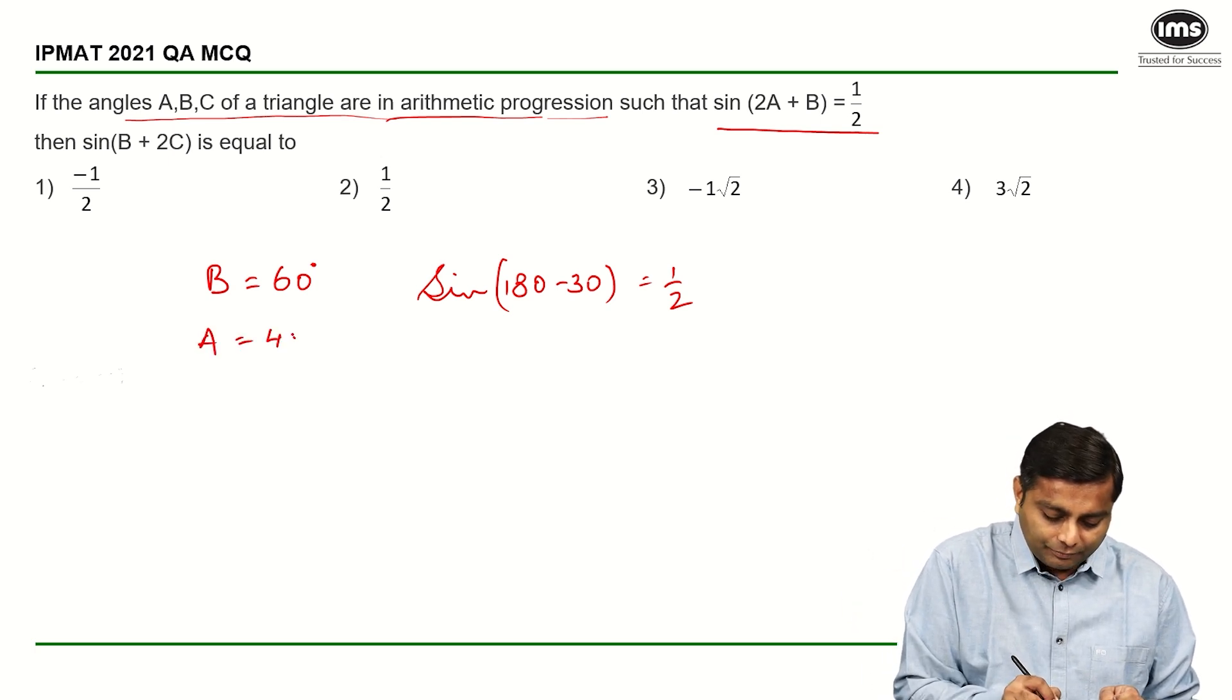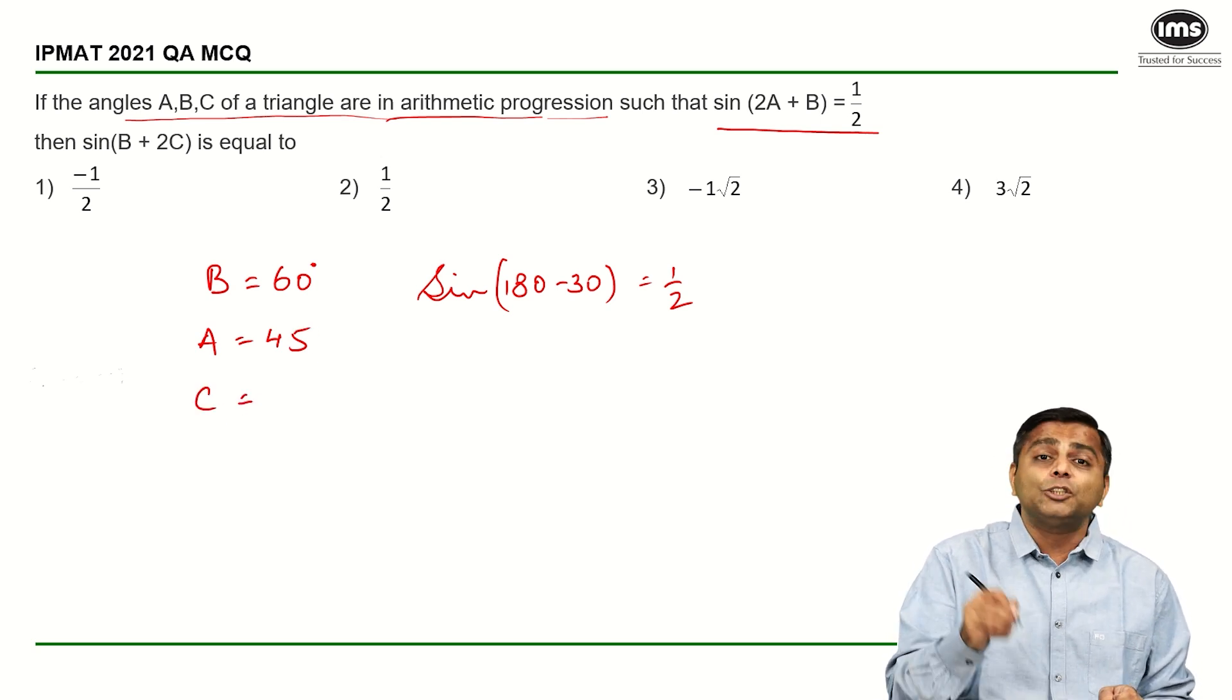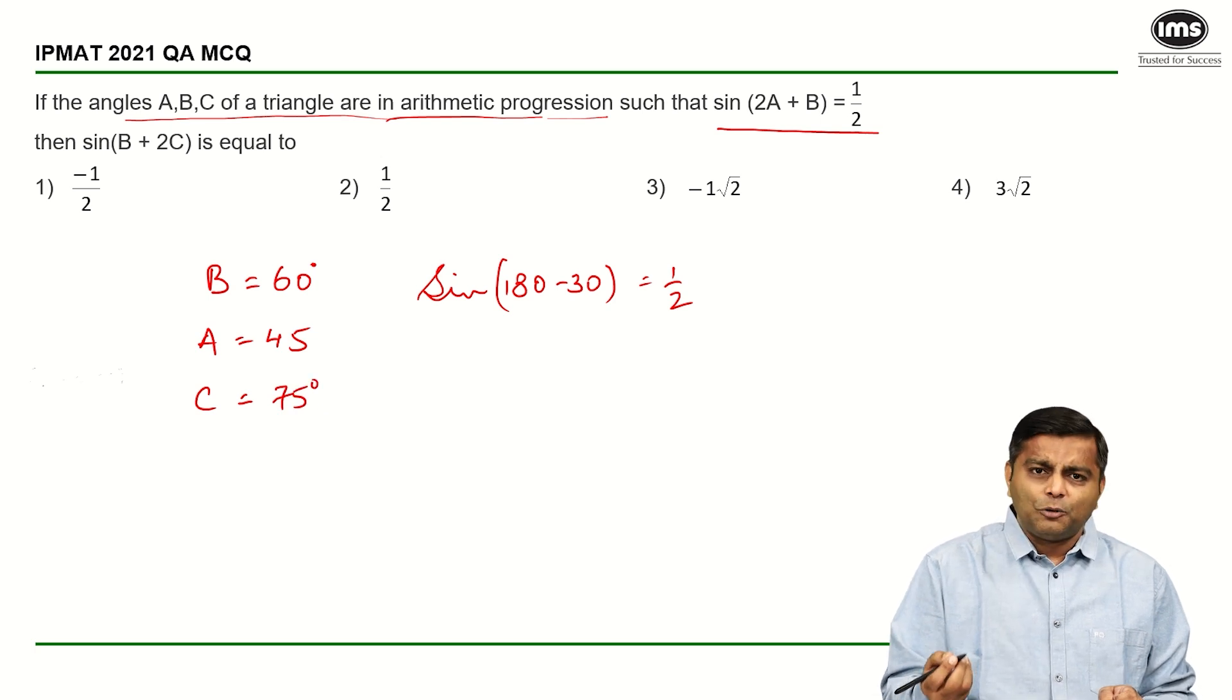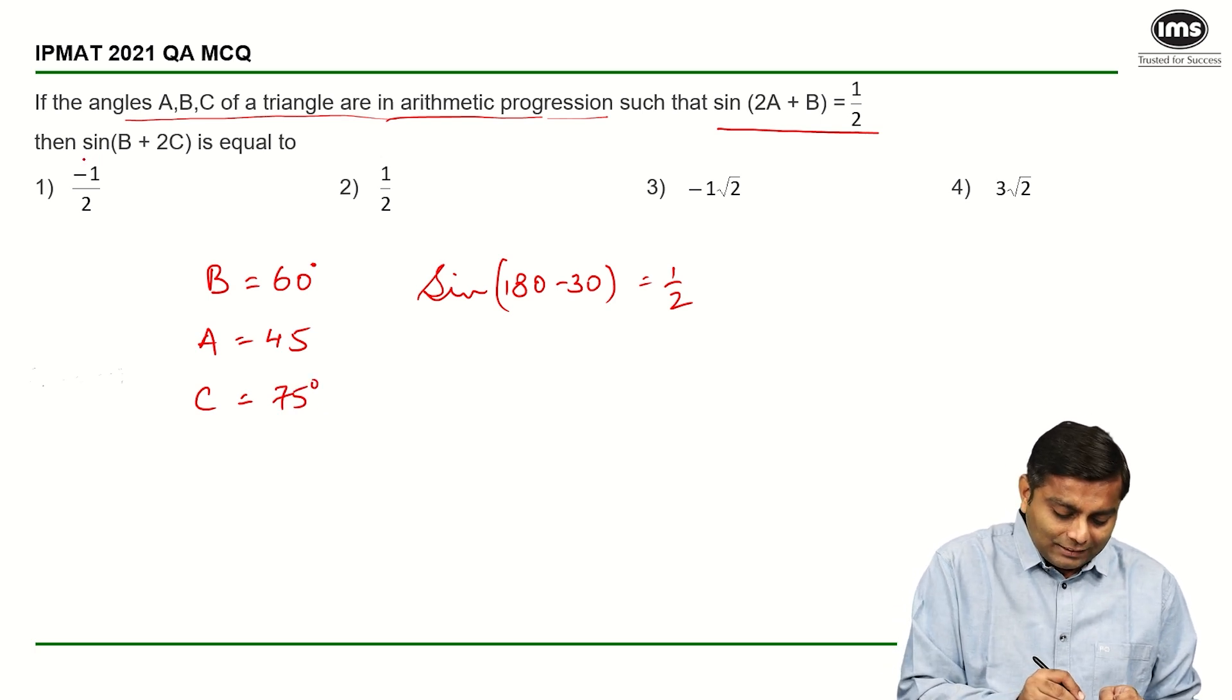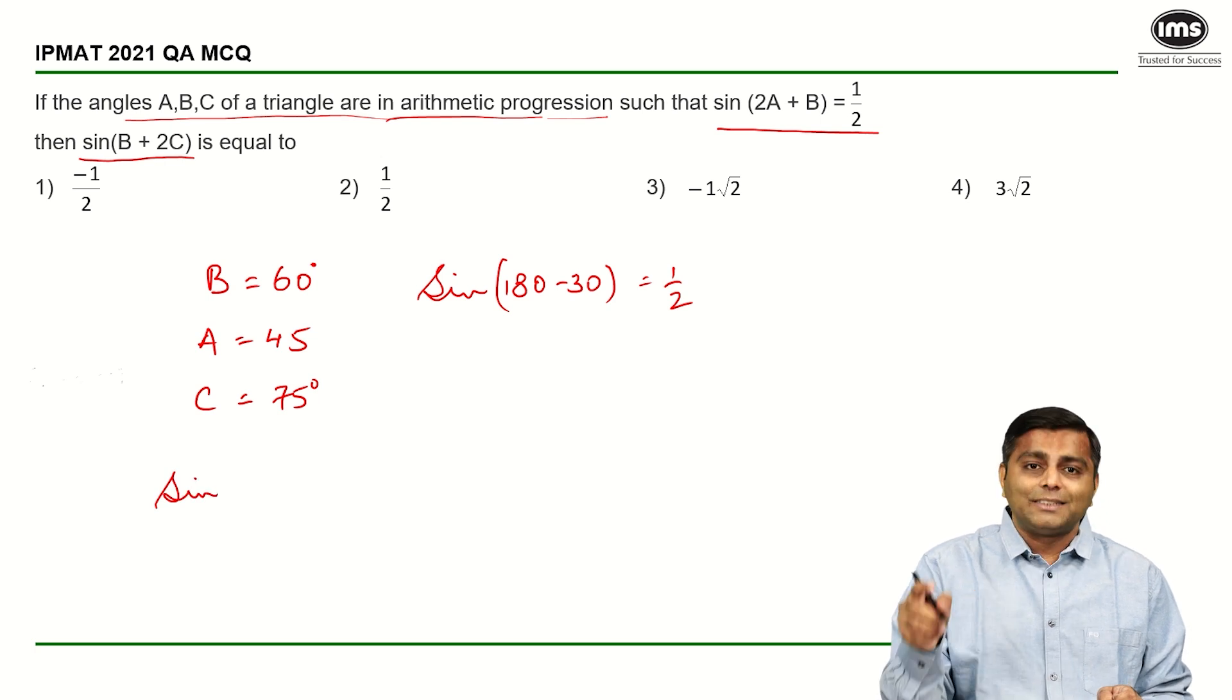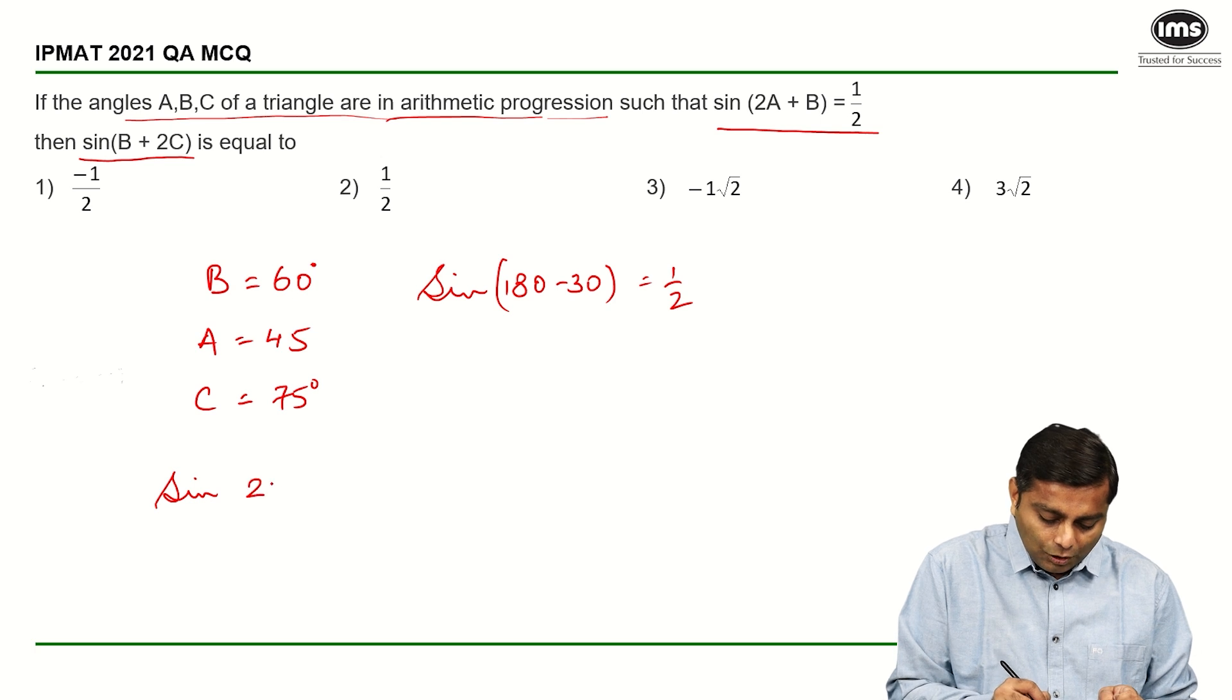So if B is 60, A is 45, C has to be 75 degrees, and that's about it. We are asked for sine of B plus 2C, so sine of B which is 60 plus 2C, 2 into 75 is 150. 150 plus 60 is 210, the sine of 210.